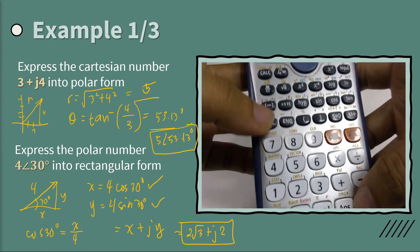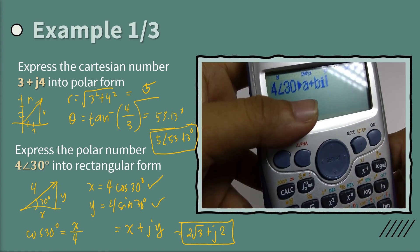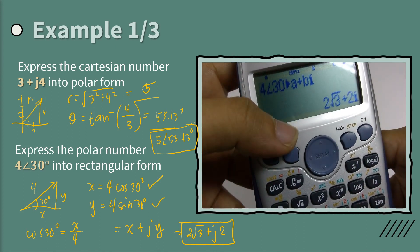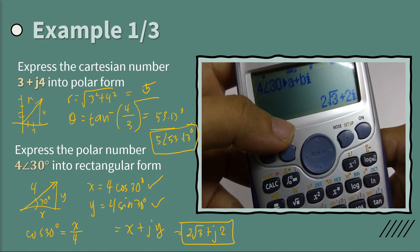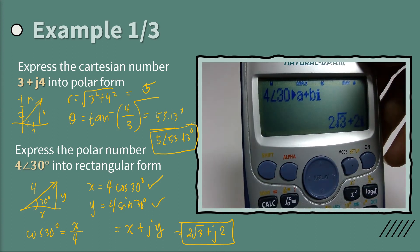So number 4, press number 4. And then you will have this display. And then press equals or enter. And we'll have 2 square root of 3 plus 2i, which is the same as our solution. So that's for the first problem.